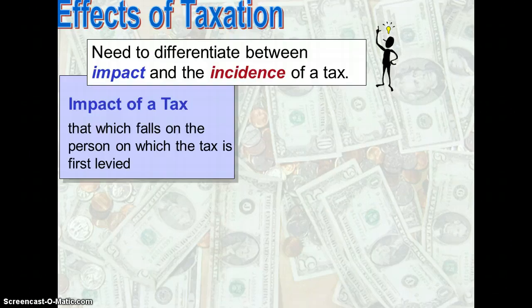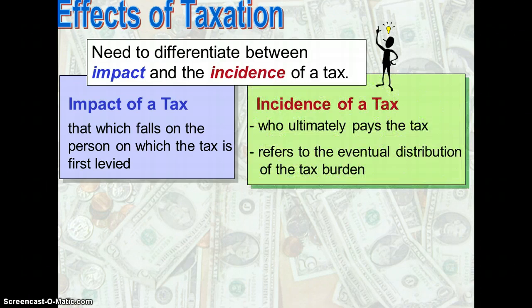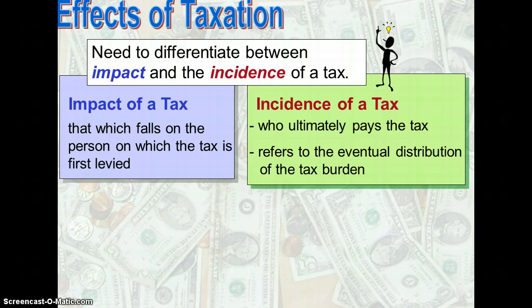Impact refers to the fall on the person on which the tax is first levied. Incidence of tax refers to who ultimately pays for the tax. For example, if the government today decides to levy or impose a $3 tax on a product, does it mean that the market price or selling price of the product will increase by $3, which means the consumer will pay fully for the amount of tax?